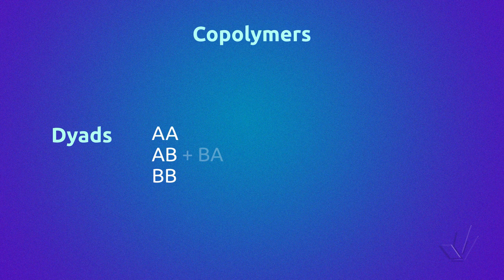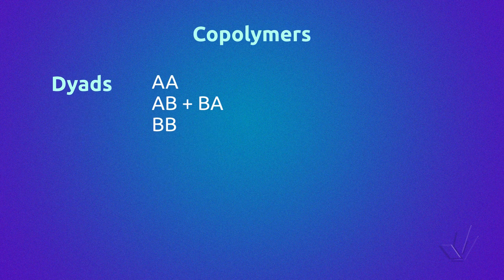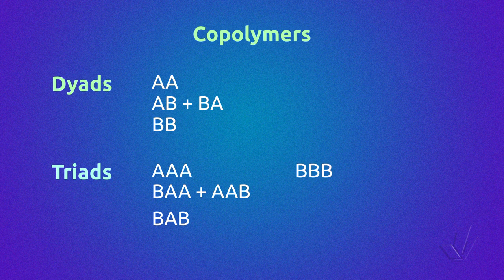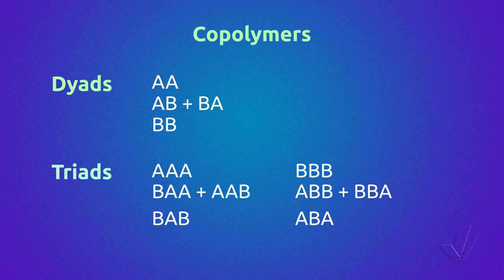The possible triads are six. Three are centered in monomer A: AAA, AAB plus BAA, and BAB. And three centered in monomer B: BBB, ABB plus BBA, and ABA. The same simplification done for the asymmetric diad is sometimes made for the asymmetric triads.